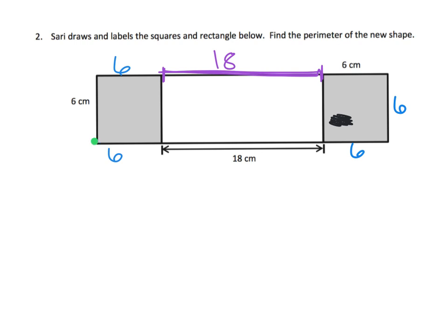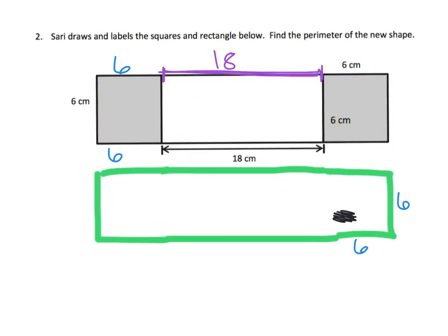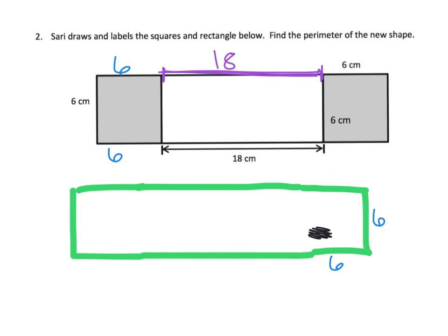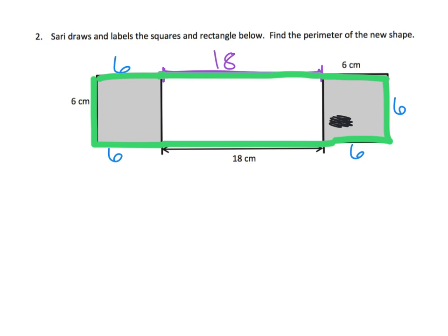Our perimeter is: 6 + 6 + 18 + 6 + 6 + 6 + 18 + 6. If you think about it, we have six sixes and two eighteens. Or, since all four long sides equal 18, we could think of it as 4 times 18.